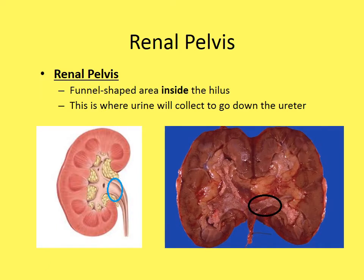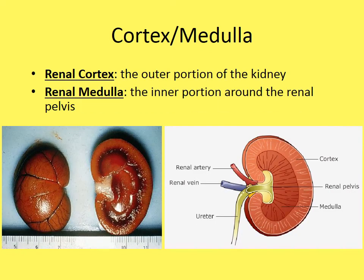The renal pelvis is a funnel-shaped area inside the hilus where urine collects before going down into the ureter. The renal cortex is the outer portion of the kidney, and the renal medulla is the inner middle portion — both of which are clearly visible on a dissected kidney.